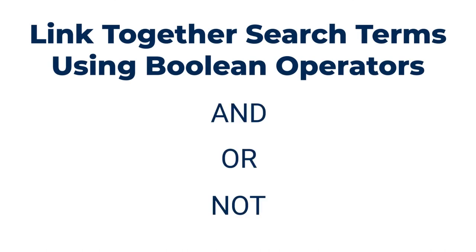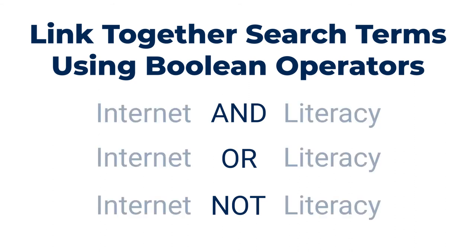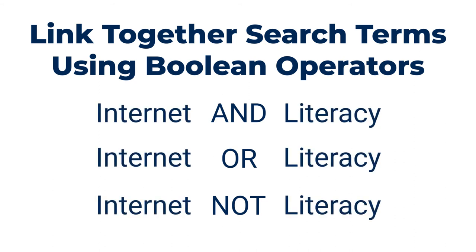Boolean operators are used to adjust search results. These operators are placed between your search terms to different effects. To learn more about Boolean operators and how they work, check out our video on searching basics.